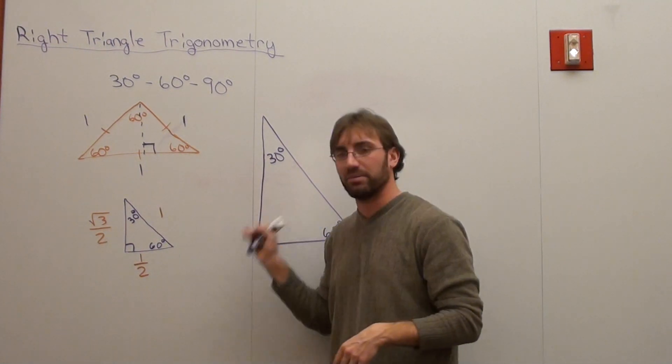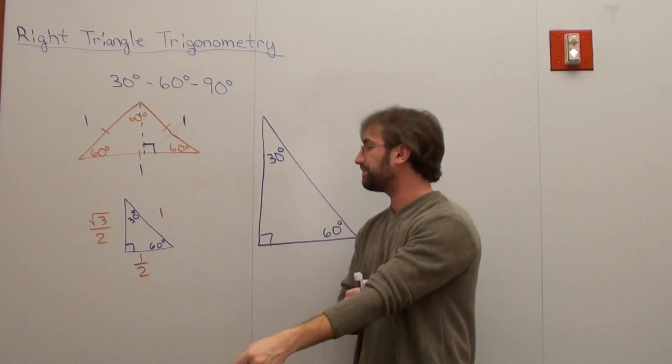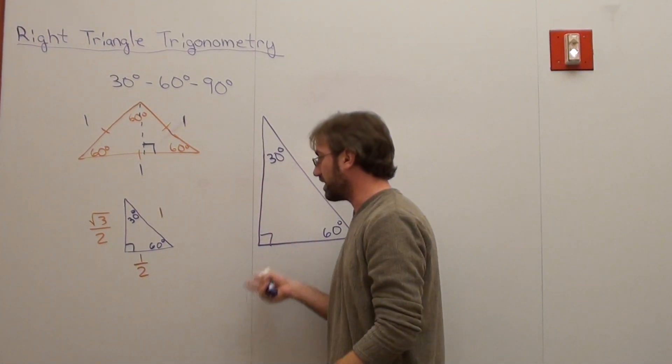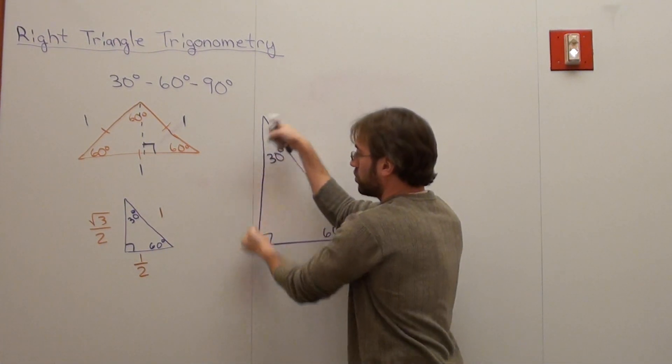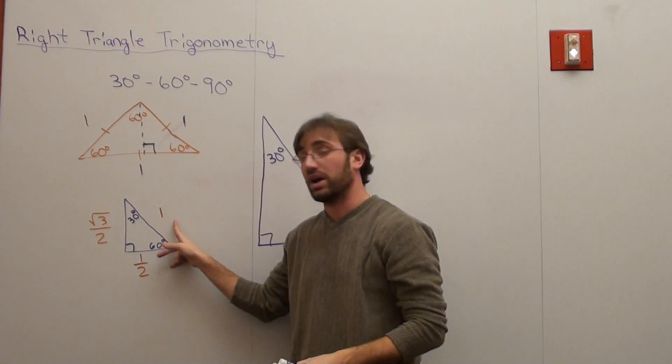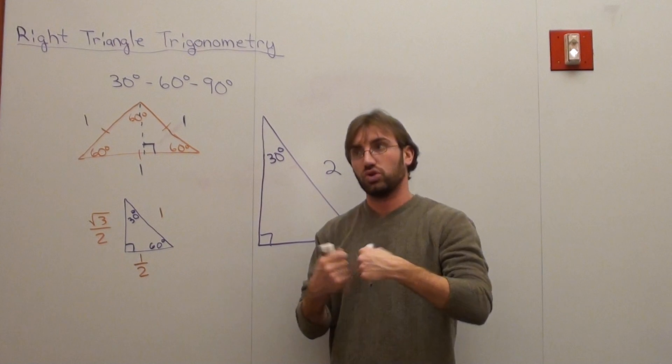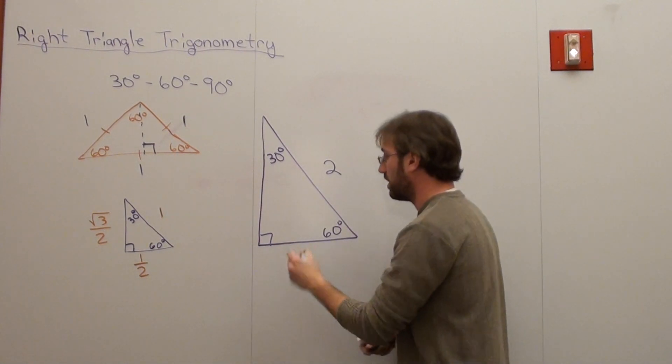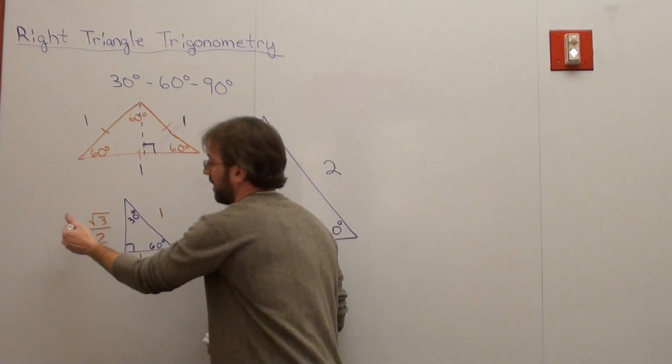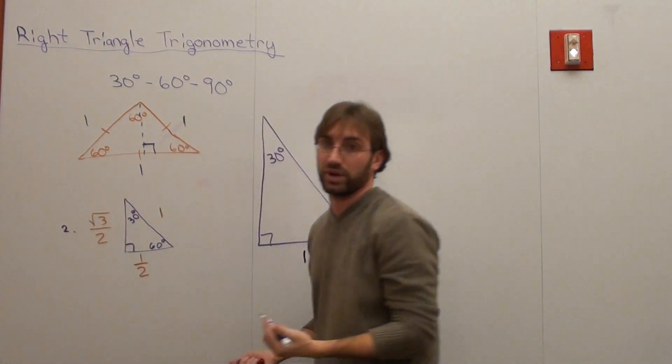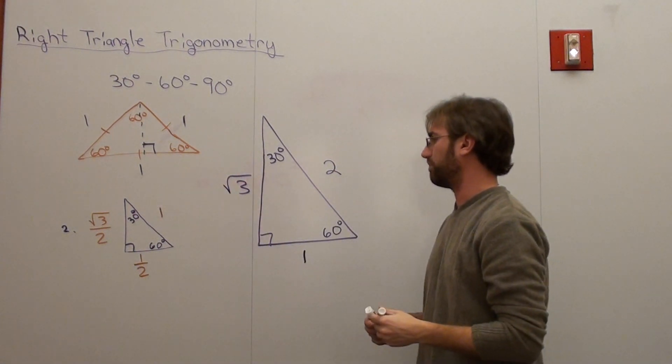I mean, the degrees might still be the same, but what happens is the lengths increase proportionally. Well, same degrees, but what I basically did was I drew it twice as big, twice as big, twice as big. So instead of one, now it's two. Instead of one-half, it's twice one-half, which is one. And instead of root three over two, it's twice as big. If you multiply by two, you get root three.